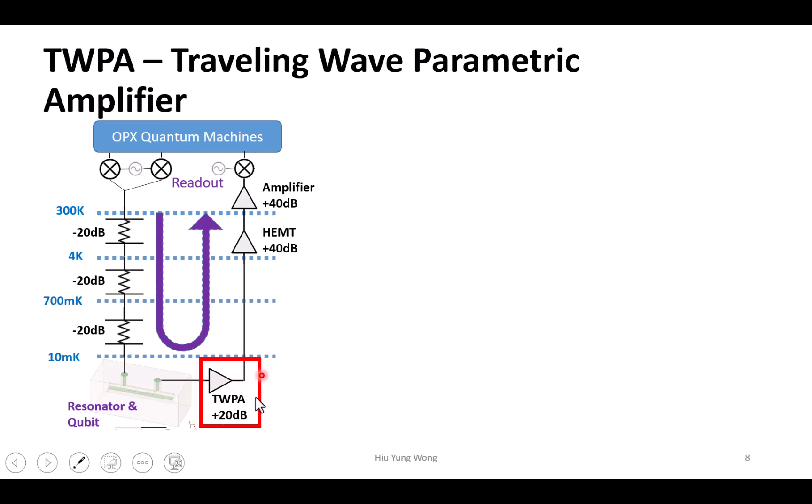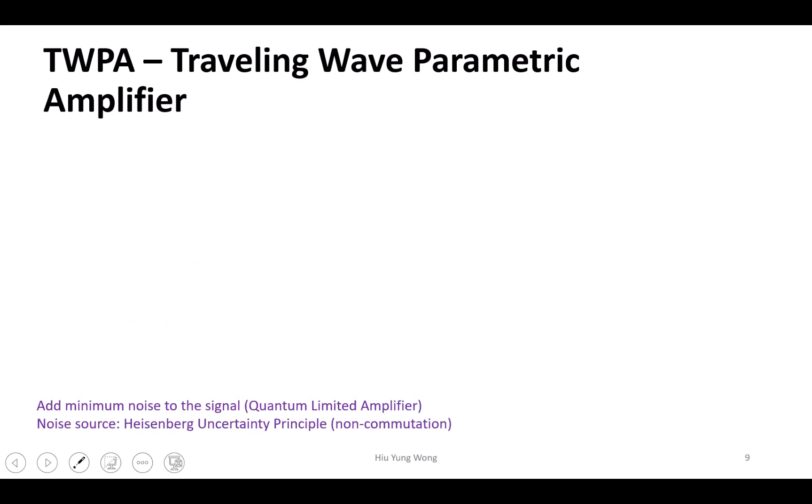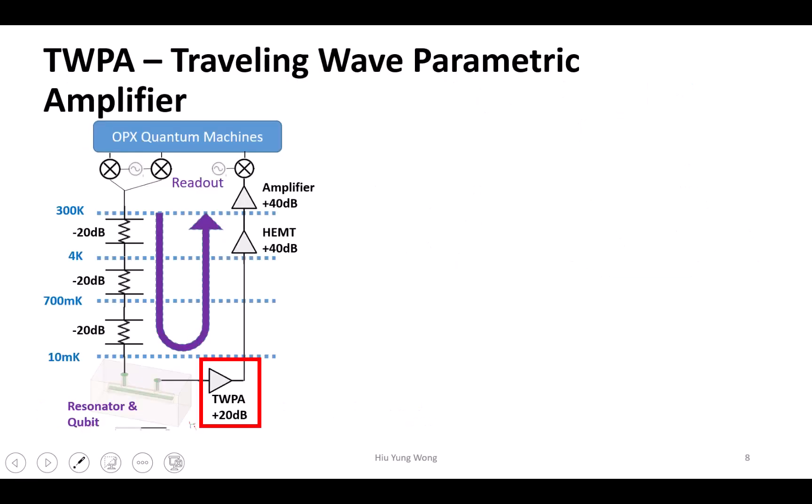This is called TWPA - Traveling Wave Parametric Amplifier. Let me see how many slides. I have two slides for this. So what is this? This is an amplifier, but it's something I also don't know well, very complicated math, but it's something that we can try to appreciate. First, let me show you something called parametric amplification.